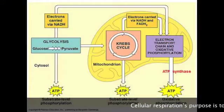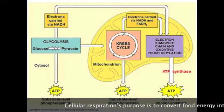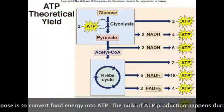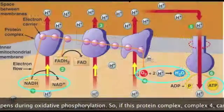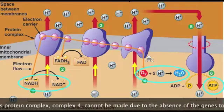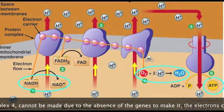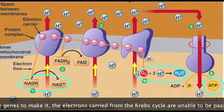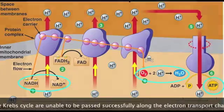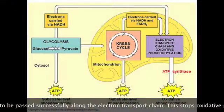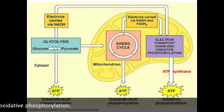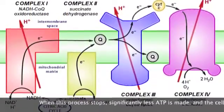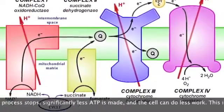Cellular respiration's purpose is to convert food energy into ATP, and the bulk of ATP production happens during oxidative phosphorylation. So if Complex 4 cannot be made due to the absence of the genes to make it, the electrons carried from the Krebs cycle are unable to be passed successfully along the electron transport chain. This stops oxidative phosphorylation, and when this process stops, significantly less ATP is made and the cell can do less work.